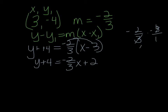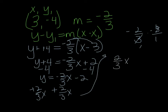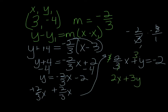Now I need to move everything over. My 4 is going to go under my 2, so my x term needs to come in front of my y term. So I subtract 4 and get y equals negative 2 thirds x minus 2. Now I'm going to take my x term and move it over — it's going to change to a positive. So I have 2 thirds x plus y equals negative 2. Remember, in standard form you cannot have a fraction, so we get rid of it by multiplying by the denominator — multiply everything by 3. I get 2x plus 3y equals negative 6. That's standard form.